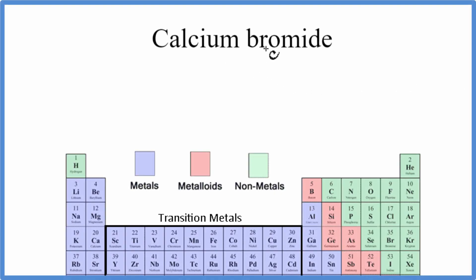To write the formula for calcium bromide, we go to the periodic table, and calcium, that's Ca, and calcium is a metal. The bromide, we look for bromine here, and that's Br, and bromine's a non-metal.